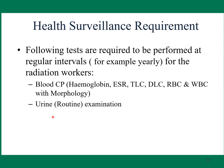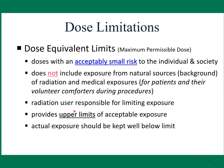Health surveillance requirements: the following tests are required at regular intervals for radiation workers — blood complete picture (CP) and urine examination. Dose limitation: the dose equivalent limit is the dose with an acceptably small risk to the individual and society. It does not include exposure from natural background or medical exposure. The radiation user is responsible for limiting exposure and must keep actual exposure well below the limits.